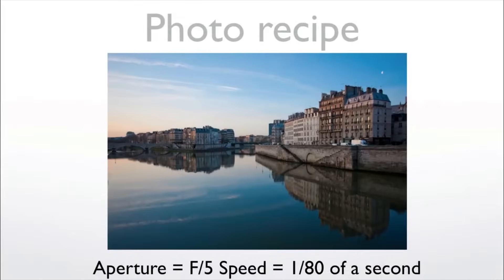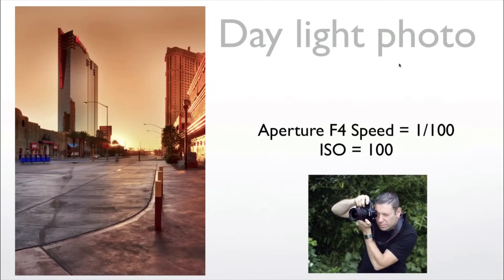Let's look at some photo recipes to illustrate everything we've covered. Early in the morning with some light, I put the aperture at F5 and in AV mode the camera told me the speed was 1/80 of a second — faster than 1/40, so I went ahead and took the shot. Next photo in Las Vegas at sunrise: F4, speed 1/100, ISO 100. I always try to be at ISO 100.